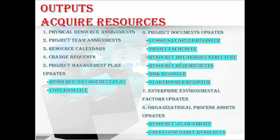The final outputs are EEF updates and OPA updates. Enterprise environmental factors updates include resource availability within the organization and the amount of consumable resources used. Organizational process assets updates include documentation related to acquiring, assigning, and allocating resources. This completes all the outputs of the Acquire Resources process.